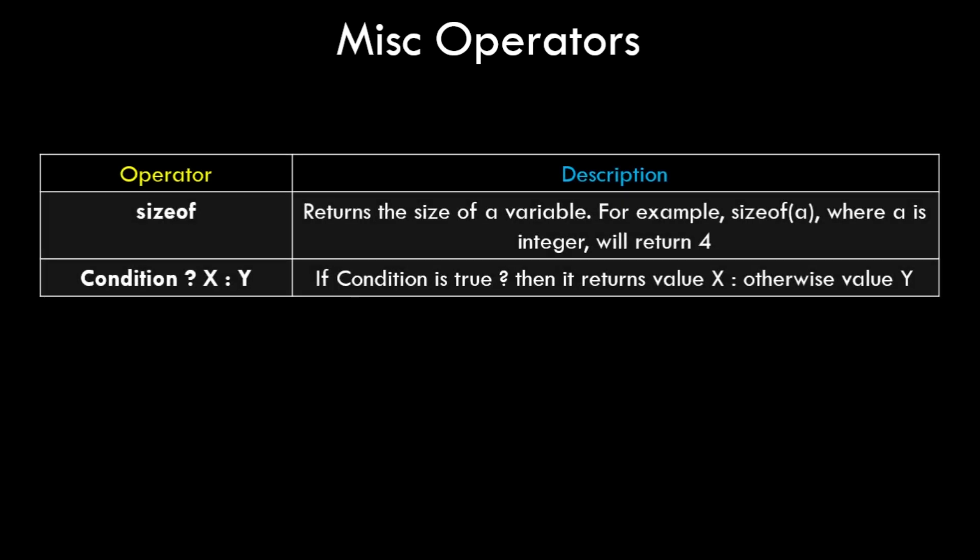The last type is miscellaneous operators, which don't fall into the other categories and aren't used as often. The sizeof operator returns the size of a variable — for example, sizeof(a) for an integer returns 4, since an integer takes 4 bytes of memory. The conditional (ternary) operator works like: condition ? x : y — if the condition is true, x is returned; otherwise y is returned.